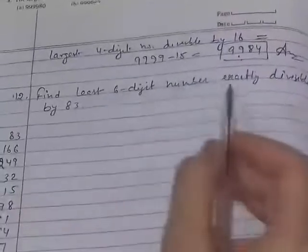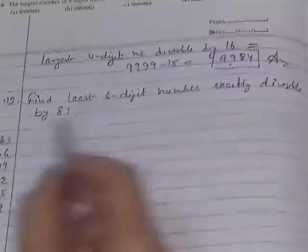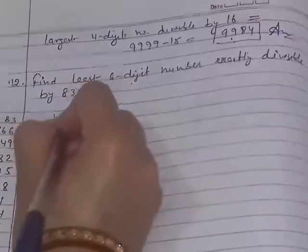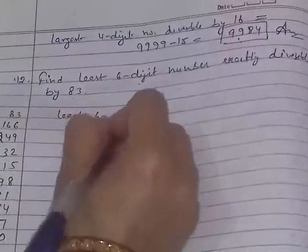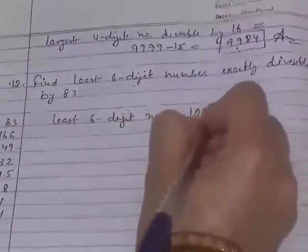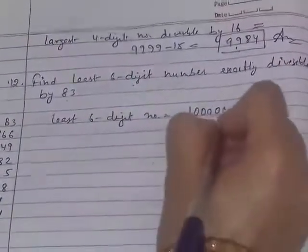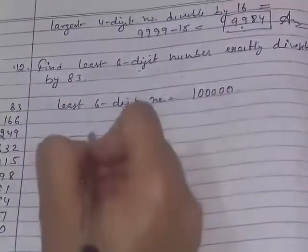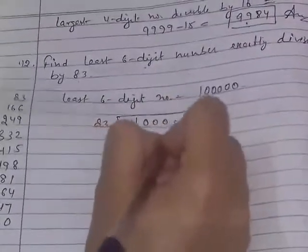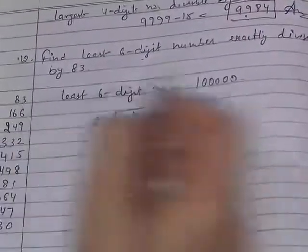Next question number 11. Find the least 6 digit number exactly divisible by 83. The least 6 digit number - first write down least 6 digit number. Least 6 digit number is 100000. Now divide it with 83.